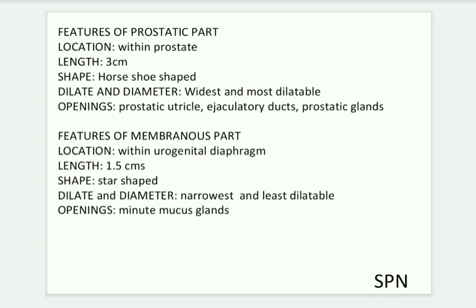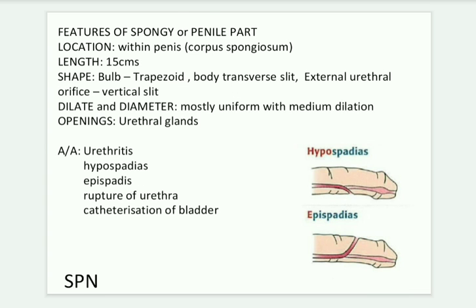Features of the spongy or penile part: its location is within the penis in the corpus spongiosum, its length is about 15 centimeters. Its shape in the bulb is trapezoid, and in the body it is a transverse slit. The external urethral orifice is a vertical slit, and its diameter is mostly uniform with medium dilatation.